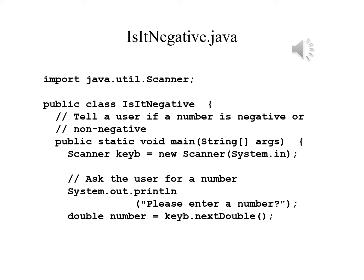Now we write the prompt to ask the user for a number: System.out.println, with the string 'Please enter a number.' After this, we have double number equals keyboard.nextDouble() and a semicolon.